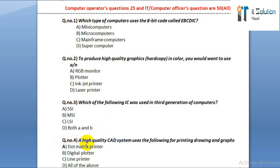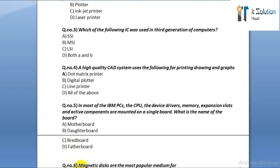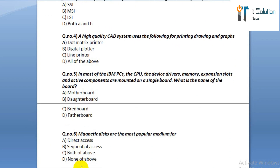Question number four: a high quality CAD system uses the following for printing drawings and graphs. Option A: dot matrix printers. Option B: digital plotter. Option C: line printer. Option D: all of the above.